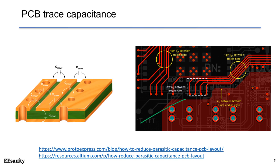If the traces are more separated, we will have low capacitance between them. In addition, we will have parasitic capacitance between the trace and the bottom polygons.